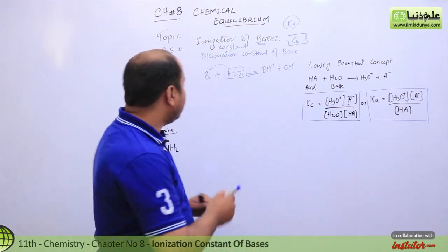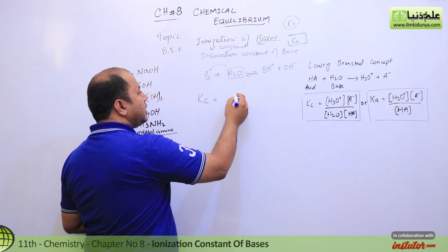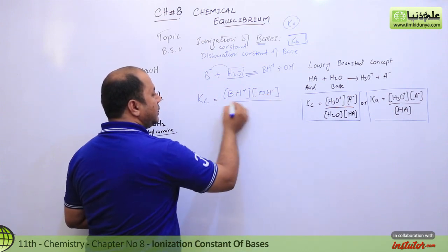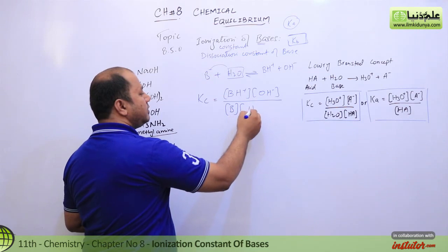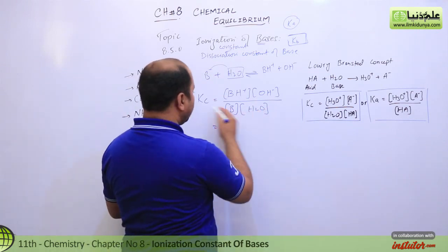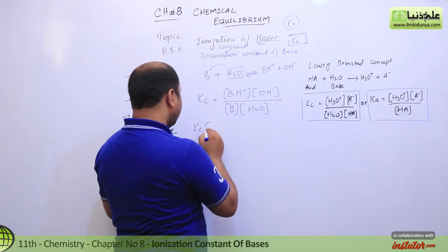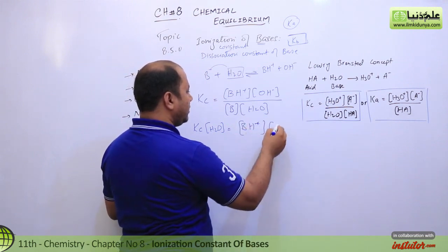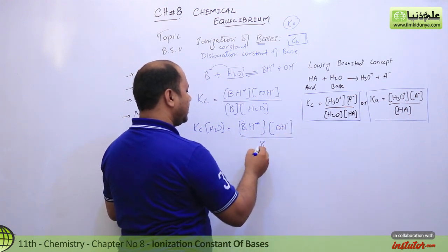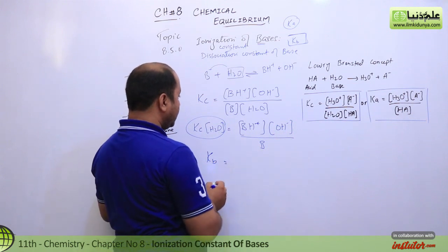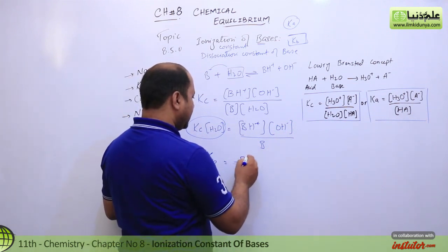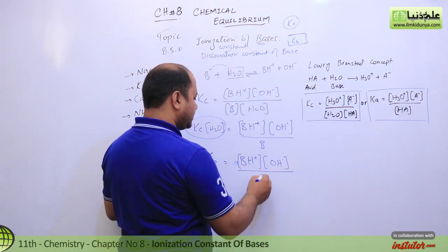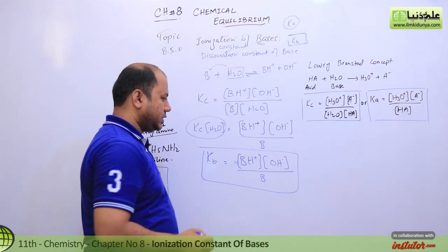We can write this equation in the form of Kb. What you can write is: Kc equals product over reactant. So we have product BH positive and OH negative, divided by B and H2O. We can think about it a bit more. Water we will remove. Kc times water concentration will equal BH positive times OH negative over B. So we write this as Kb now, because it's the dissociation constant for base. That's Kb equals BH positive times OH negative over B.